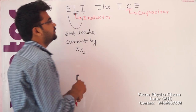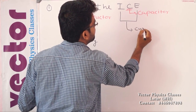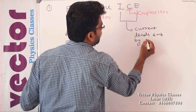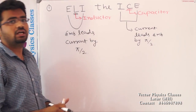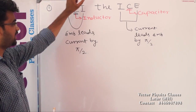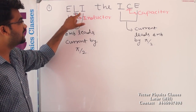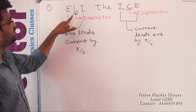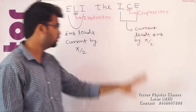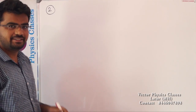And in the ICE part, for the capacitor, I represents current and E represents EMF — meaning current leads EMF by π/2. So in the inductor, EMF leads current by π/2, and in the capacitor, current leads EMF by π/2. If you remember ELI the ICE, there will be no confusion.